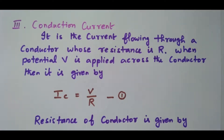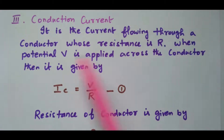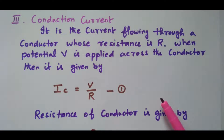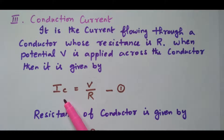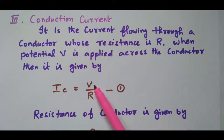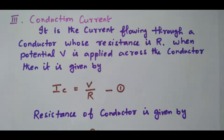Now we will see the conduction current. Conduction current is the normal current flowing through any conductor with resistance R. If the potential V is applied across the conductor, then the conduction current Ic equal to V divided by R.